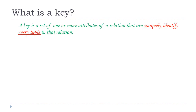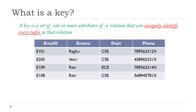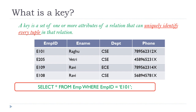A key is a set of one or more attributes of a table that can uniquely identify every record in that table. To find the key, if we write a SELECT statement with that particular attribute and a value in the WHERE clause, we must get either 0 or 1 record at maximum, not more than 1 record. Such an attribute can be considered as a key.